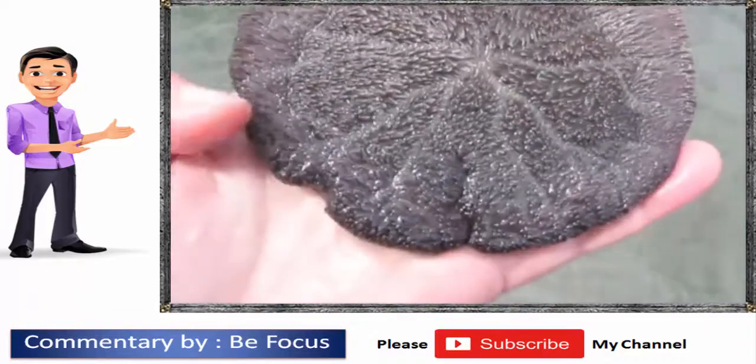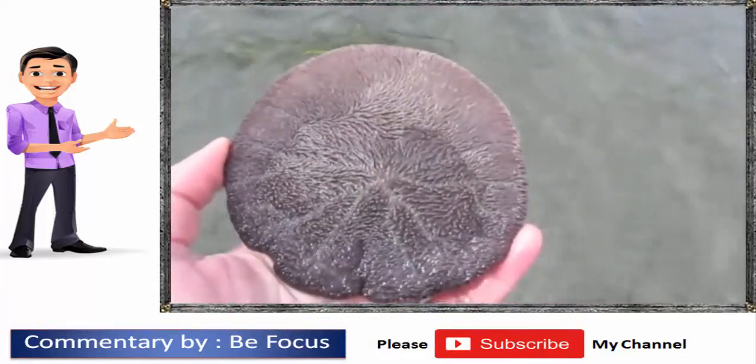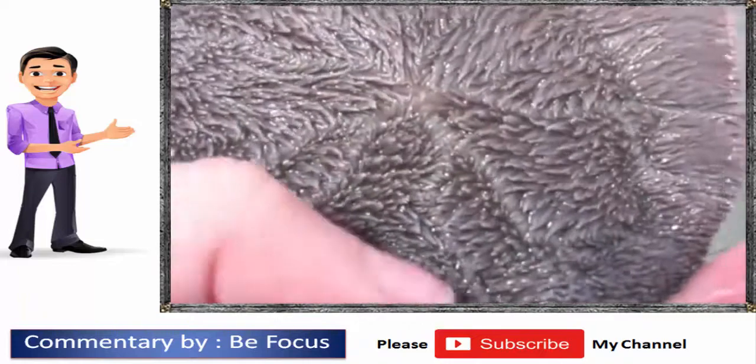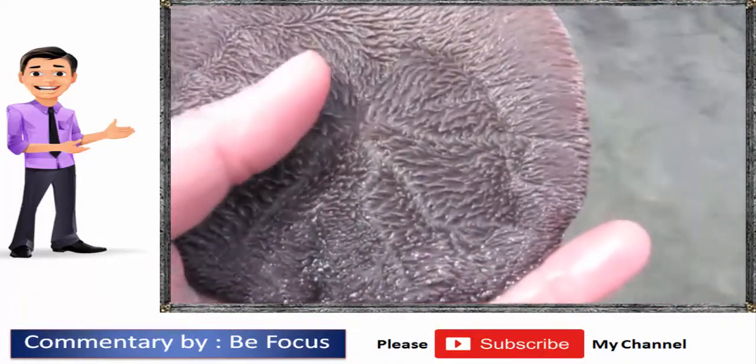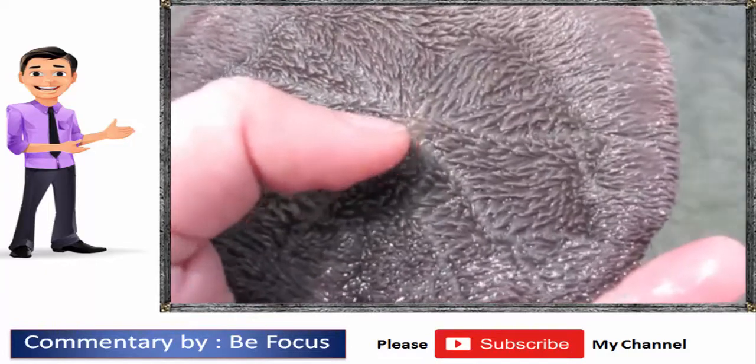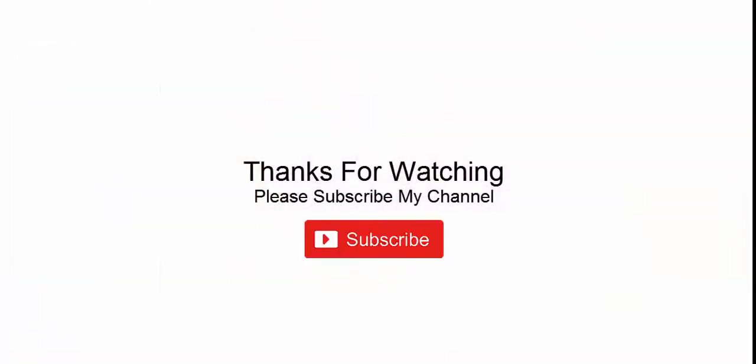What these sand dollars actually eat is microscopic organisms floating in the water. So that's why they have all these fine, fine bristles. They'll actually catch this plankton, move it with their bristles towards the center, which is where their mouth is, and then consume it that way.